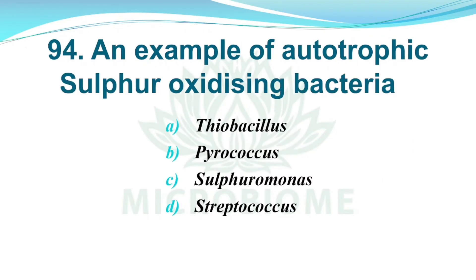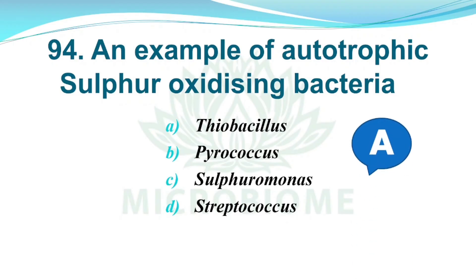And next, an example of autotrophic sulfur oxidizing bacteria. Options: A) Thiobacillus, B) Pyrococcus, C) Sulfuromonas, D) Streptococcus. The right answer is Option A, Thiobacillus.